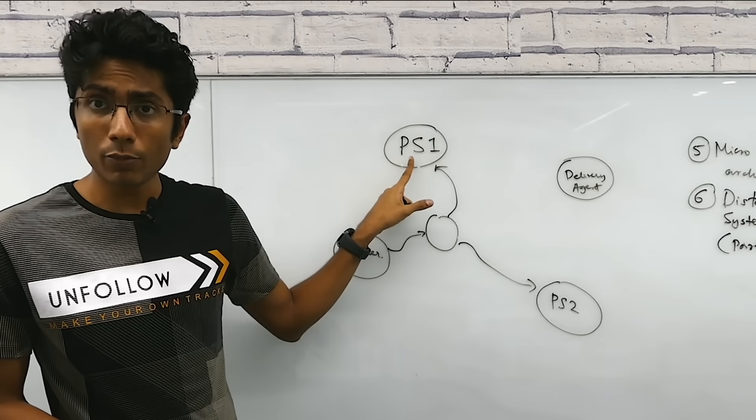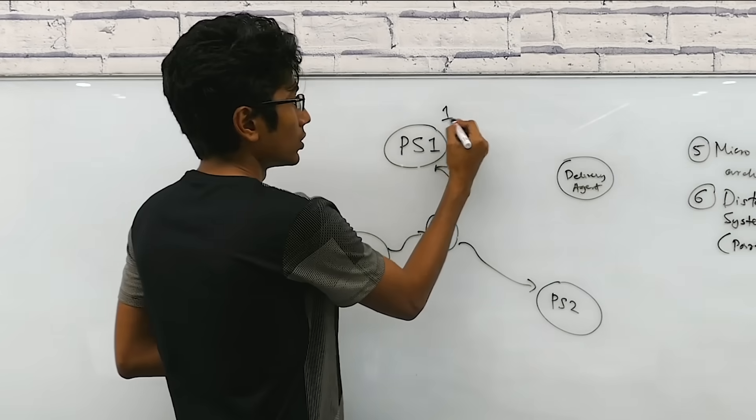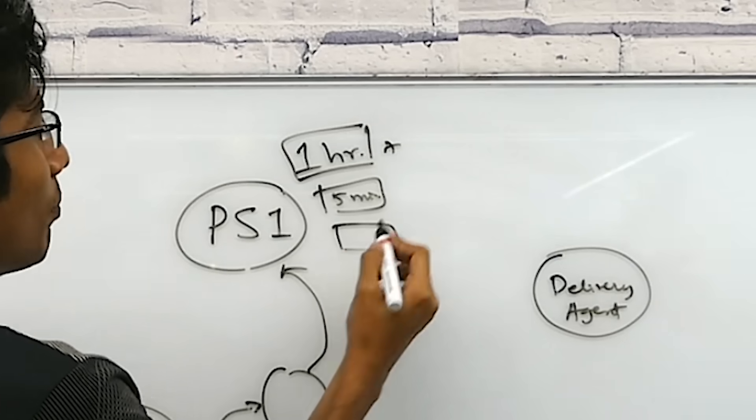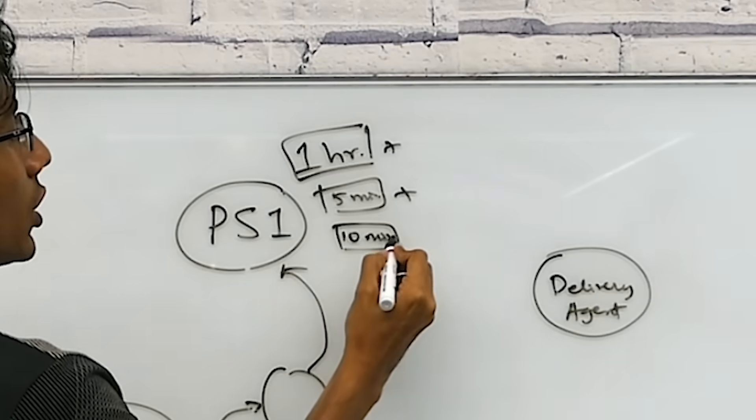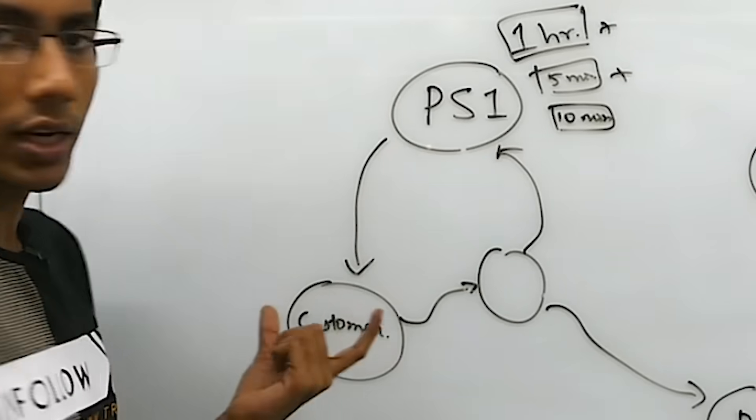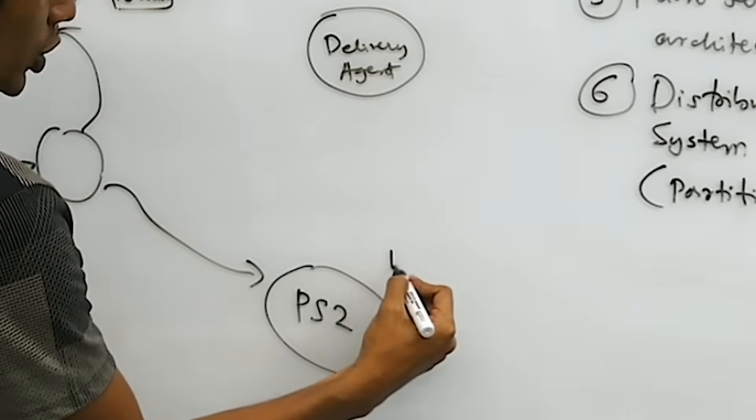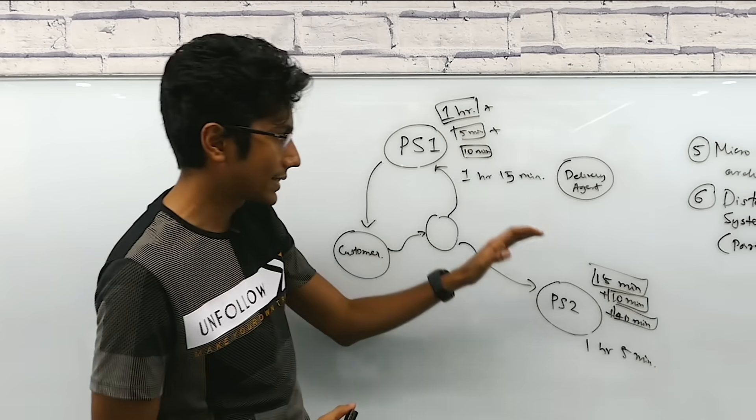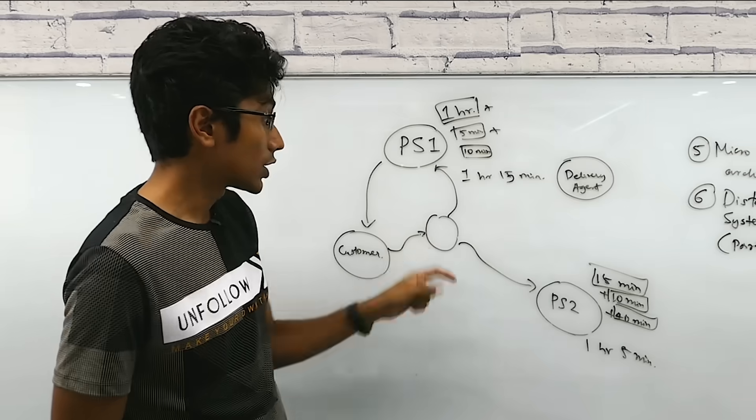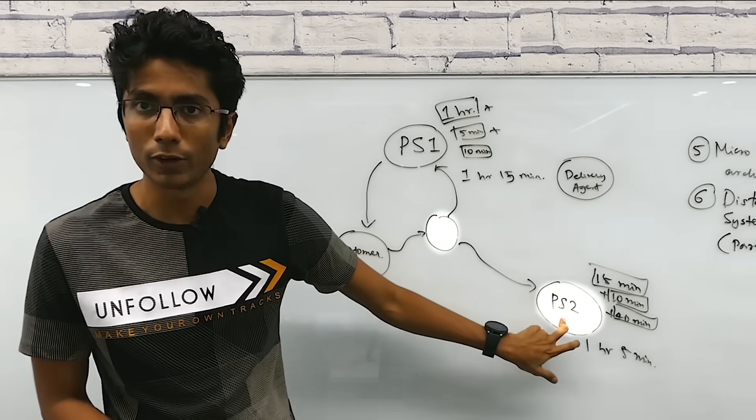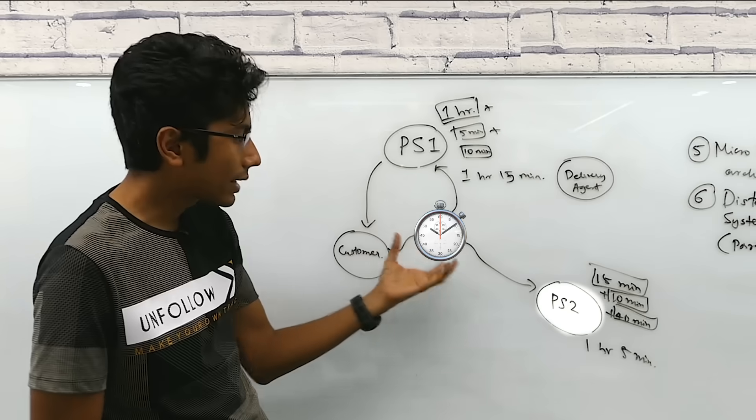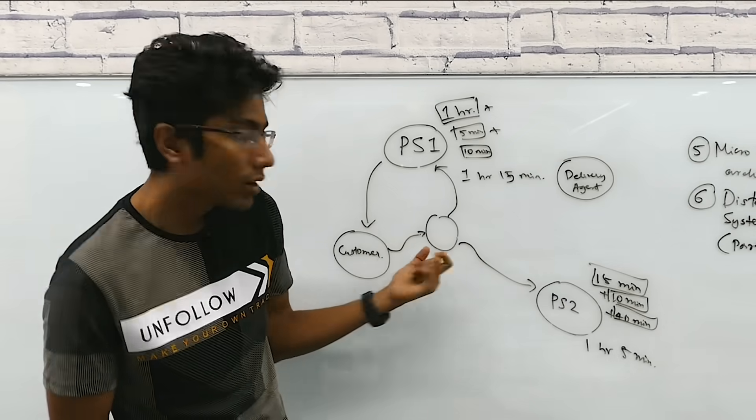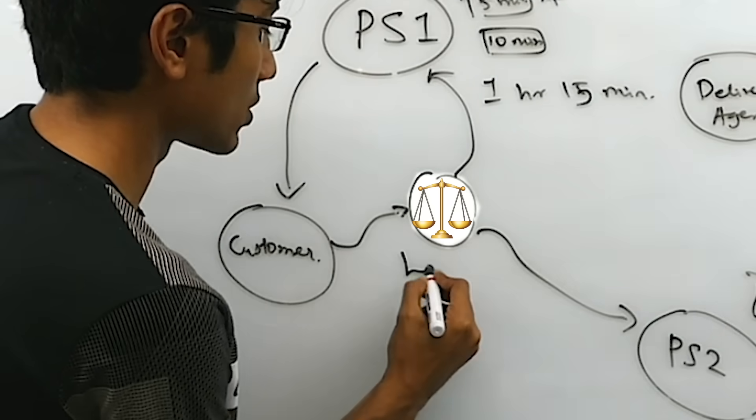If you send it to pizza shop one, it's a really popular shop. Maybe it takes one hour for it to wait in queue plus five minutes to make. Plus 10 minutes to deliver from PS one to the customer. Over here, pizza shop two has a really short wait time. The total time required here is one hour five minutes, which is less than the one hour 15 minutes required over here. So the central authority should actually send it over here. And as long as it's getting real time updates, it can make intelligent business decisions, which means more money. This thing that routes requests in a smart way is called a load balancer.